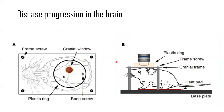The brains of these animals can be non-disruptively monitored following surgical implantation of a cranial window. This image illustrates how we can repeatedly image the mouse cortex after implanting a cranial window, performing extensive animal training, and developing an apparatus for head immobilization with a customized holder that sits under an upright microscope.